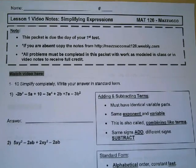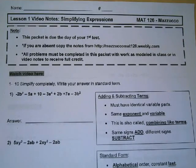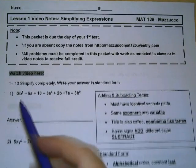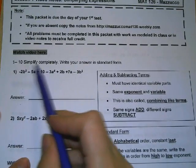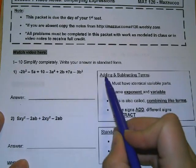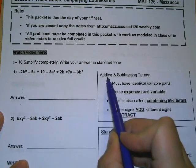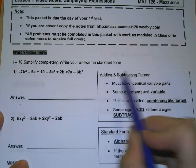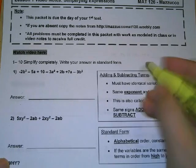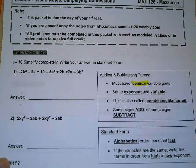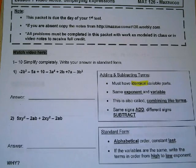This lesson is on simplifying algebraic expressions. Simplifying means rewriting in a simpler way that does not change the value from the original problem. In example one, since there are plus and minus signs between terms, we're going to add and subtract. To do that, they must have identical variable parts — B's with B's, A squareds with A squareds, AB's with AB's.